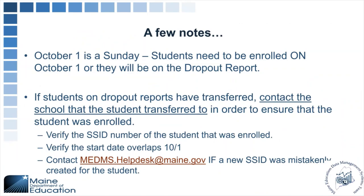A few key notes: October 1 is a Sunday, so students need to be enrolled on October 1 or they will appear on the dropout report — enrollment dates must start on or overlap October 1. If a student is on the dropout report but has transferred, contact the receiving school to ensure the student was enrolled. Verify the student's state ID number and confirm the start date overlaps 10-1. If a student was mistakenly added as a duplicate — for example, a second ID number was created during an SSID import — please reach out to the help desk.